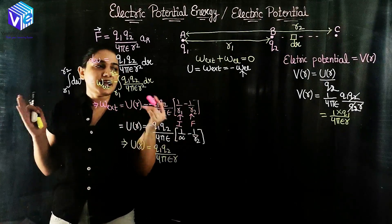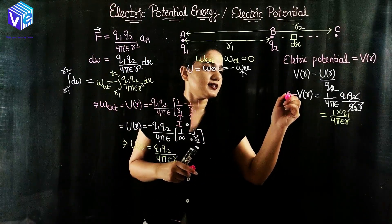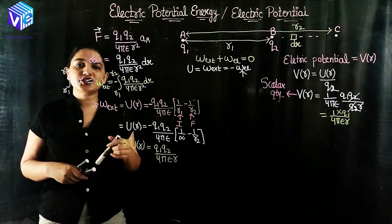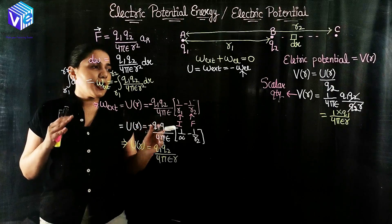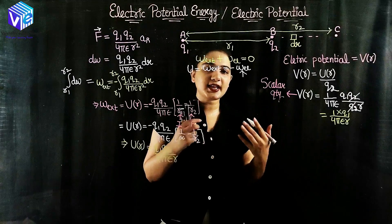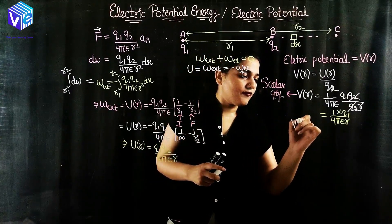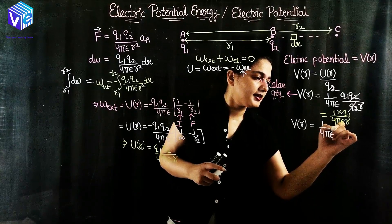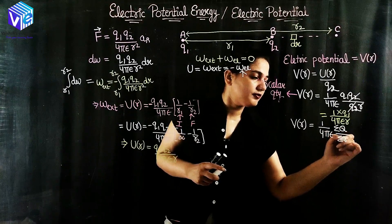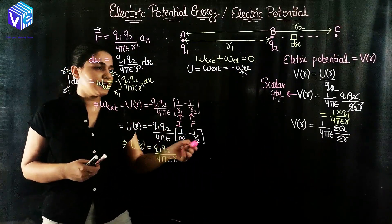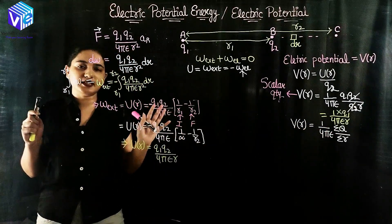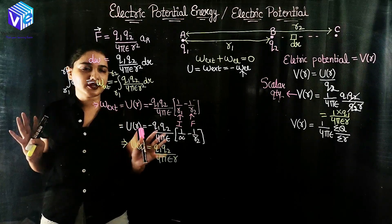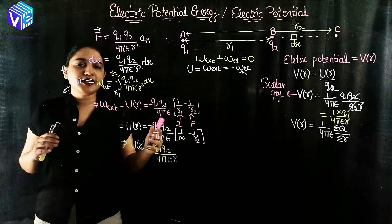Electric potential is a scalar quantity. If I have a system of charges, to find the total electric potential I simply add the magnitudes of the electric potentials. V(r) for a system of charges equals 1 upon 4πε times the summation of Q/r for each charge — adding the potential due to each charge at its respective distance. This is the voltage due to different numbers of charges placed in a region.